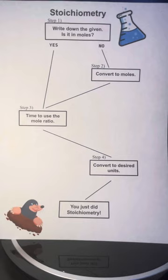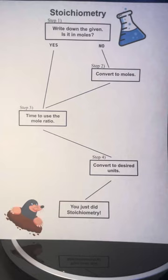The final step is to ask yourself if it's in the desired units. If it is, then you're done. But if it's not, you need to convert back to your desired unit. If you need to convert to grams, you multiply by molar mass over moles. If you need liters, you multiply by 22.4 liters over moles. If you need molecules or atoms, you multiply by Avogadro's number, which is 6.02 times 10 to the 23rd power over moles.